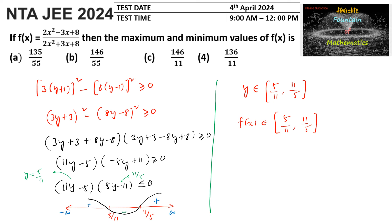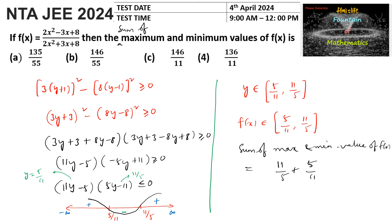The minimum value is 5/11 and the maximum value is 11/5. The sum of maximum and minimum values of f(x) = 11/5 + 5/11. With LCM 55, this equals (121 + 25)/55 = 146/55. So the answer is 146/55, which is option B.